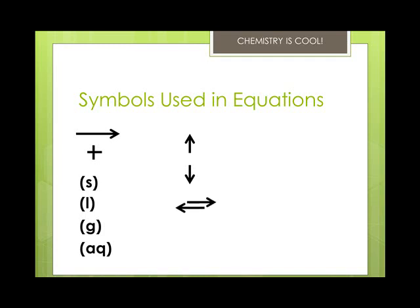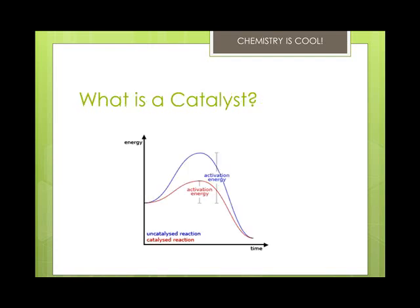Double arrows indicate a reversible reaction — there will be more on those later. The triangle symbol above the reaction arrow means heat has been applied. Another symbol indicates that a catalyst is used; in this case it's platinum, but it could be pretty much anything. Catalysts are substances that speed up reactions without being changed by the reaction. Enzymes are an example of biological or protein-based catalysts, but not all catalysts are enzymes.